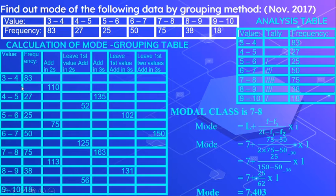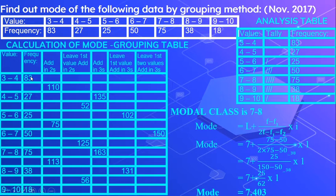Then the last column: we leave out the first and second frequencies, then add in 3s. So 25 plus 50 plus 75 gives 150. We stop as there are no more groups of 3. This completes our grouping table. To recap: add frequencies in 2s; leave the first frequency and add in 2s; add in 3s; leave the first frequency and add in 3s; then leave the first two frequencies and add in 3s. Grouping table is done.